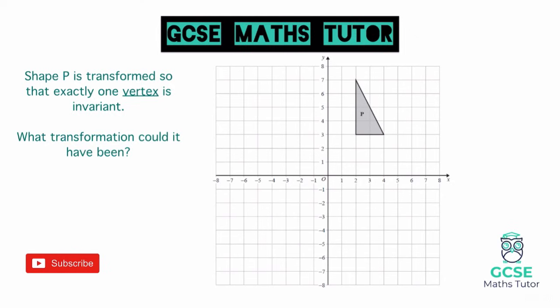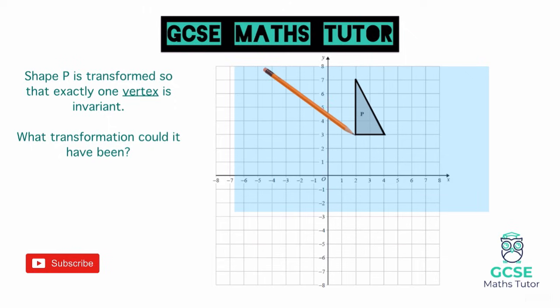The first question says that shape P is transformed so that exactly one vertex is invariant. Looking at the vertices — the highlighted points on the triangle — we want to make a transformation where one point does not move. If we pick the point by the right angle in the bottom left and put tracing paper over the shape, we can do a rotation to demonstrate what invariant actually means.